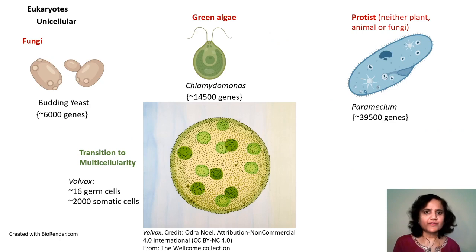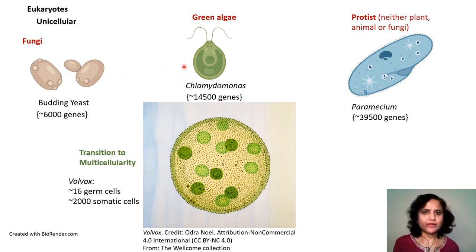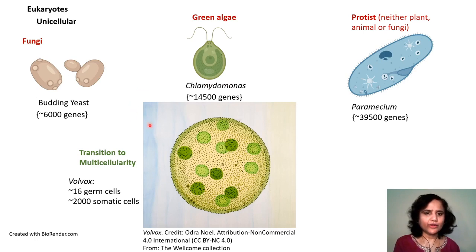This slide shows the diversity of eukaryotes. As mentioned, eukaryotes can be either uni- or multicellular. Shown at the top are various unicellular eukaryotes such as yeast — a model system in cell and molecular biology research — the green alga Chlamydomonas, and the protist Paramecium. A transition to multicellularity occurred early on; shown at the bottom is the alga Volvox, which has 16 germ cells and about 2000 somatic cells.